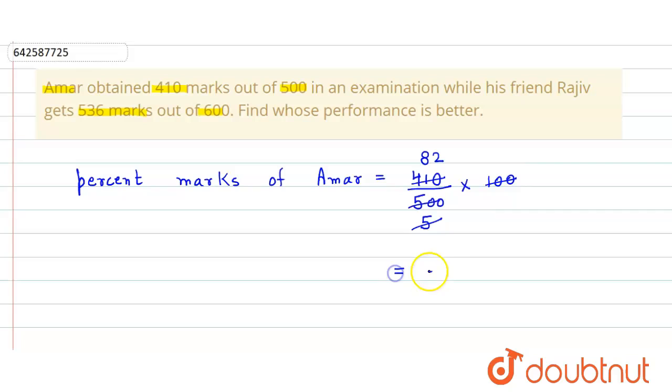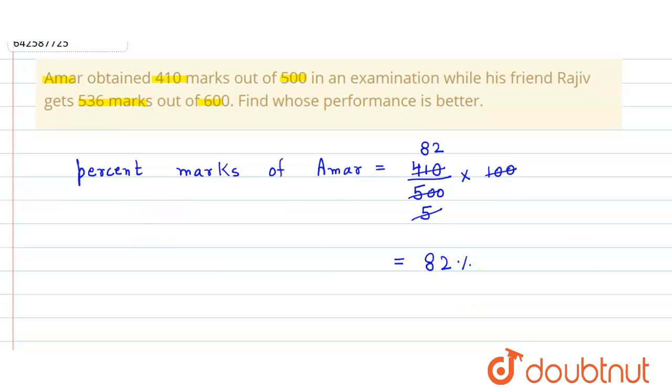So we get equals to 82 percent, the percent marks of Amar. And then similarly we find out the percent marks of Rajiv.